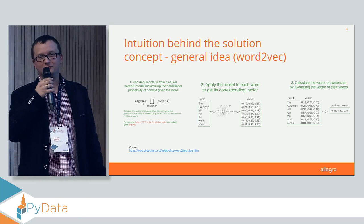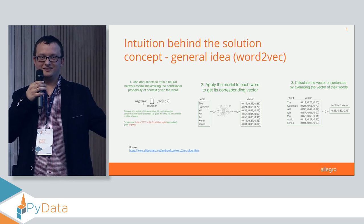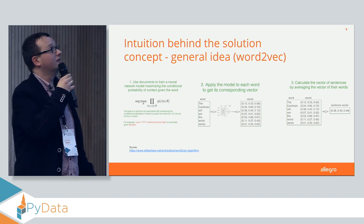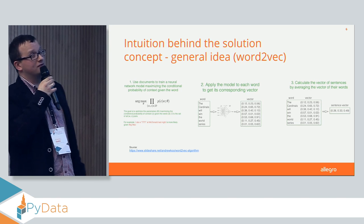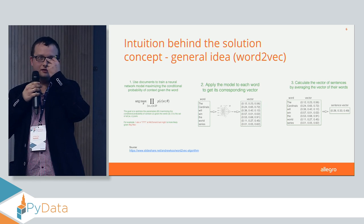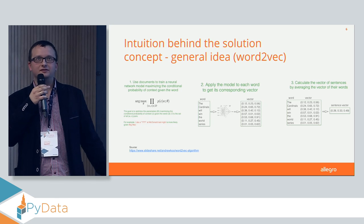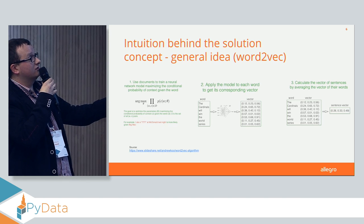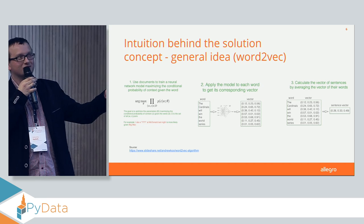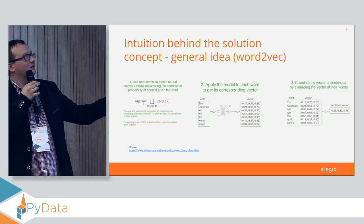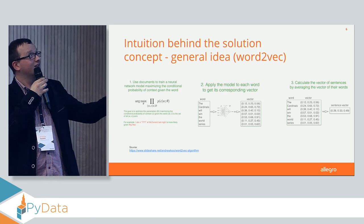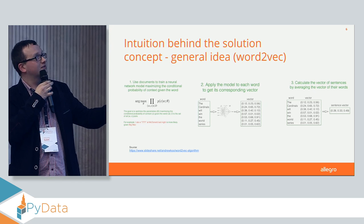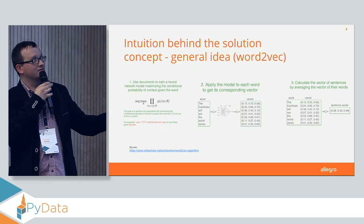There are many nice things you can do. Machines prefer vectors over symbolic representations, so you can feed these vectors to other machine learning techniques. You can do analogy tests, which I'll show on the next slide. And very usefully, you can turn whole sentences into vectors — change each word into a vector and then average these vectors along the dimensions to get a sentence vector.